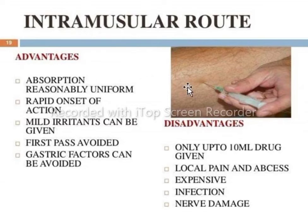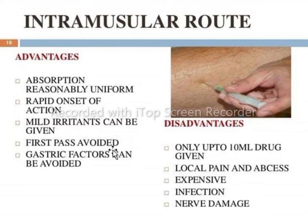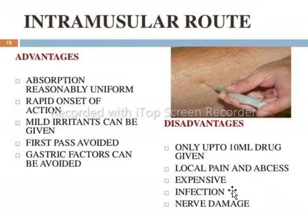The intramuscular route involves drug administration into a muscle, especially the deltoid muscle. Advantages include reasonably uniform absorption, rapid onset of action, ability to use mild irritants, avoidance of first pass effect, and avoidance of gastric factors. Disadvantages include a volume limit of up to 10 ml, local pain and abscess formation, expense, chance of infection, and risk of nerve damage.